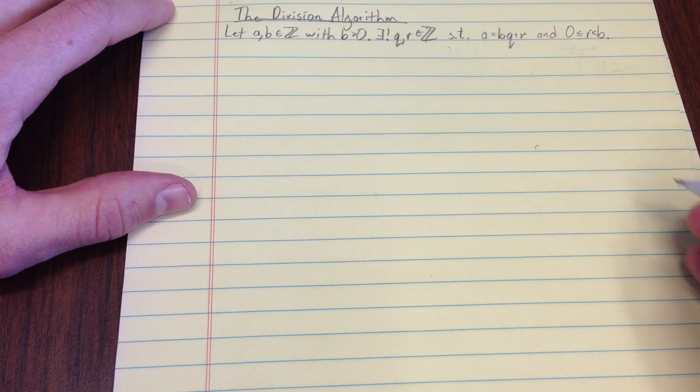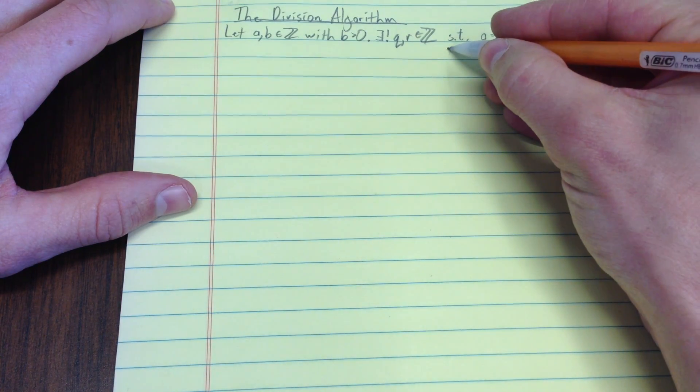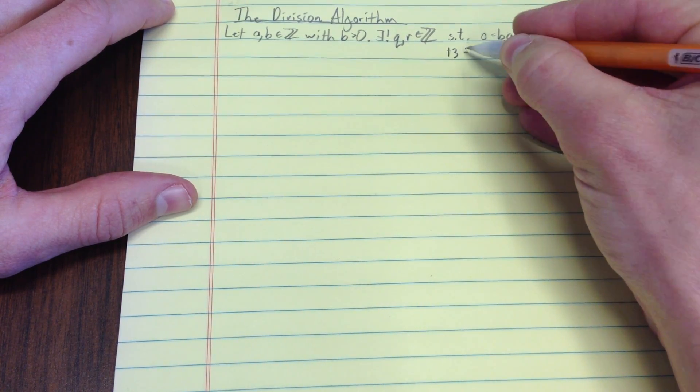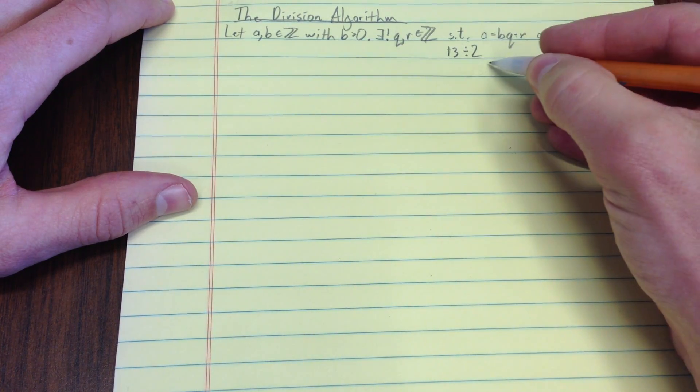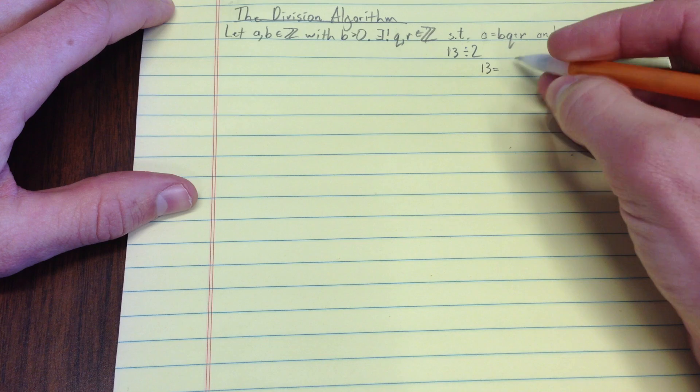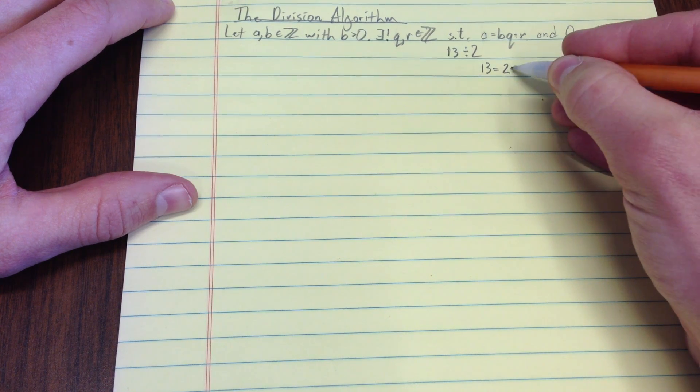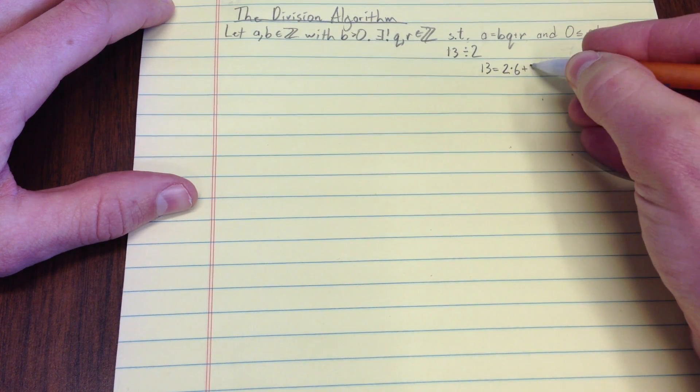So maybe your classic example would be something like a is 13, b is 2. And so you would say, 13 equals how many 2's? Well, 6 2's plus 1 left over.